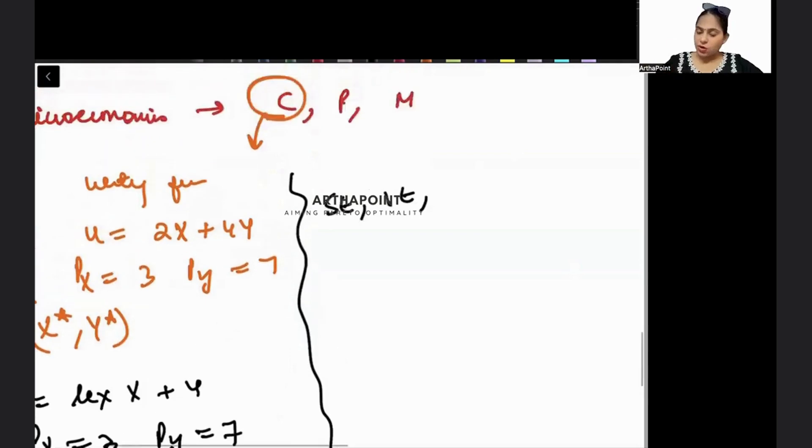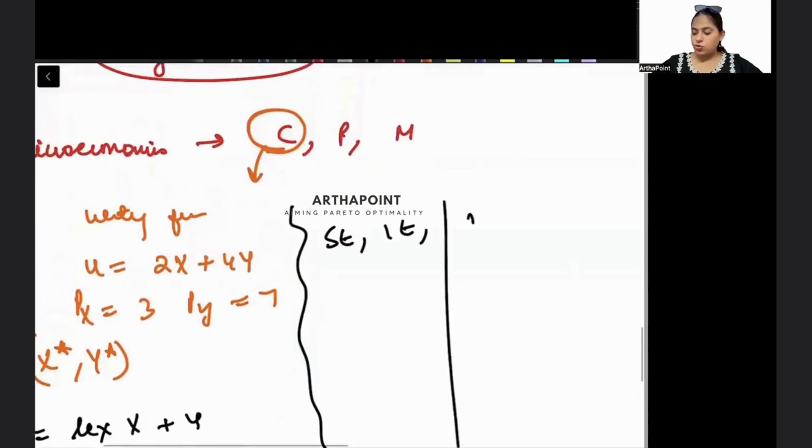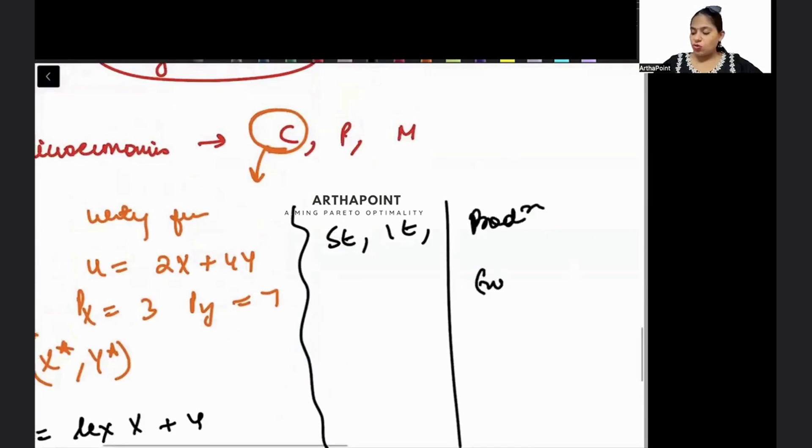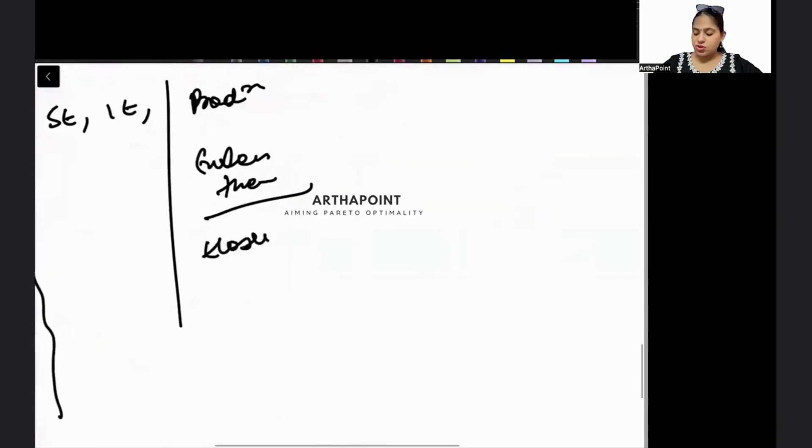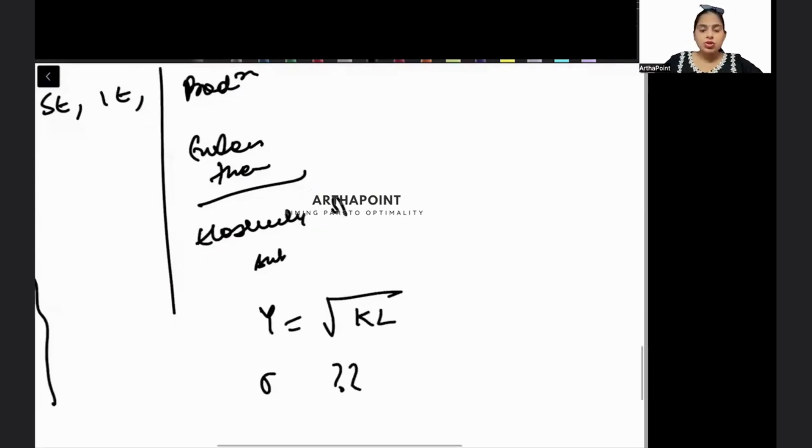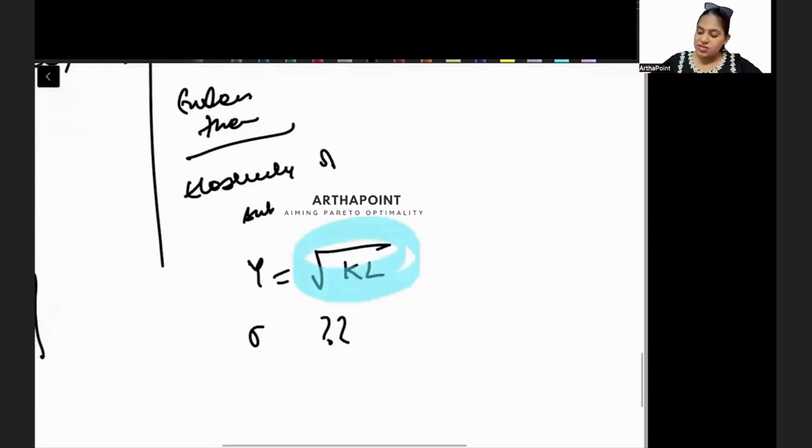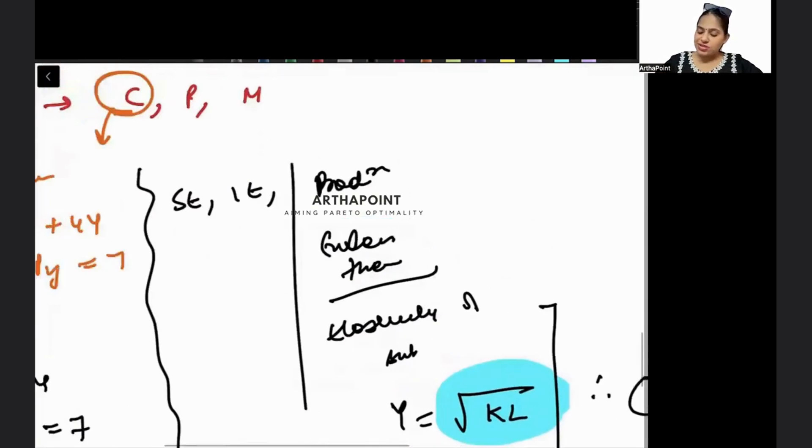After this, you will be asked on production theory also. I can ask you on Euler's theorem, how this is used in production theory. I can ask you questions on elasticity of substitution. I have a function that Y equals root of KL, and I will ask you find the elasticity of substitution. You have to use the property that this is Cobb-Douglas production function, therefore the elasticity of substitution will be one. So this kind of questions can be asked.